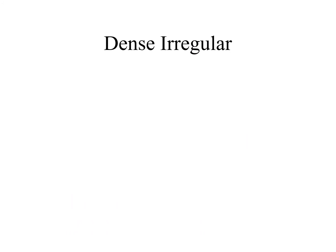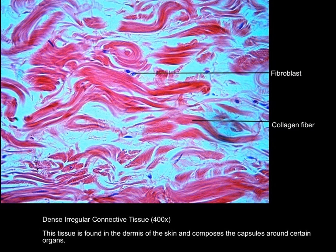Dense irregular connective tissue has collagen fibers running in all sorts of directions — it might look like a pork chop, but it is connective tissue, not muscle. Every now and again you spot a fibroblast nucleus. Because fibers run in multiple directions, no matter how you pull or tug on this tissue, support is provided by these multi-directional collagen fibers. It is commonly found in the dermis of the skin.